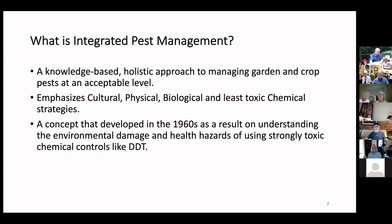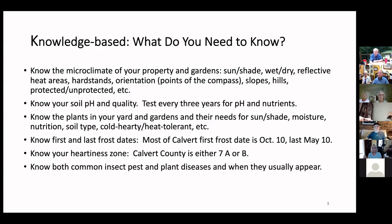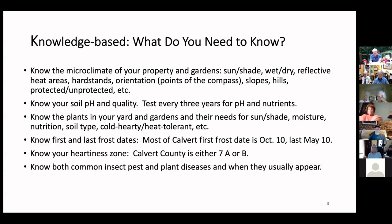Knowledge-based means you need to know the microclimate of your property and garden — the sunny areas, shady areas, partially sunny or shady areas, wet and dry areas, and reflective heat areas. Reflective heat has to do with structures on your property like sheds, your house, and hardscapes like patios and driveways.